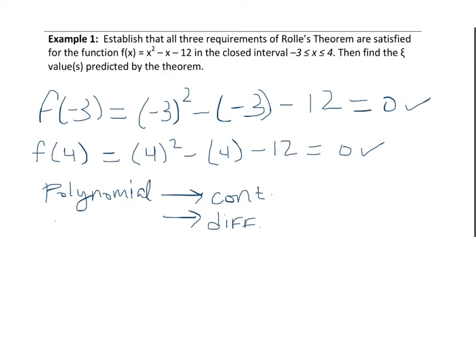So that being said, there is at least one point C in the open interval such that f prime of C equals 0. We're going to look for this c value where our derivative equals 0. Since it is differentiable, we'll take the derivative. Taking the derivative of x squared minus x minus 12, the derivative becomes 2x minus 1 equal to 0.